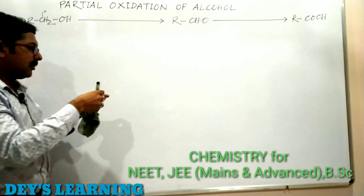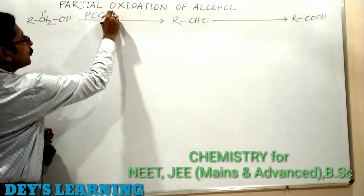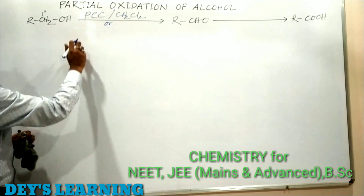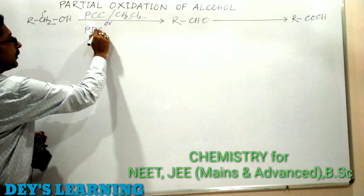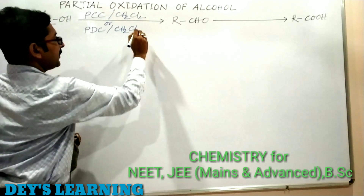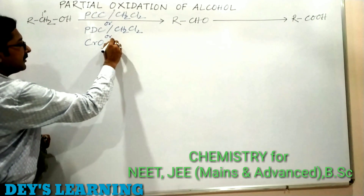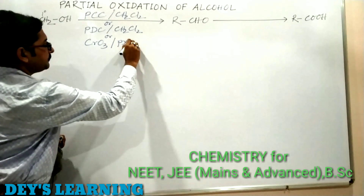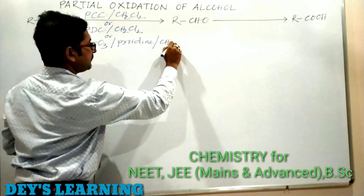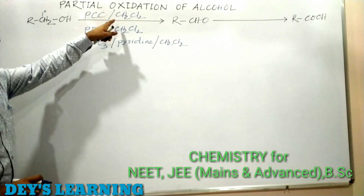This partial oxidation — the oxidation of a primary alcohol to aldehyde — can be carried out by several reagents: PCC (pyridinium chlorochromate) in CH2Cl2 solvent, PDC (pyridinium dichromate) in dichloromethane solvent, or CrO3 (chromium trioxide) in the presence of pyridine in CH2Cl2 solvent. We need to know about these three reagents.